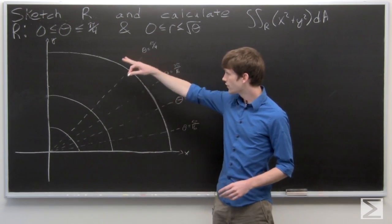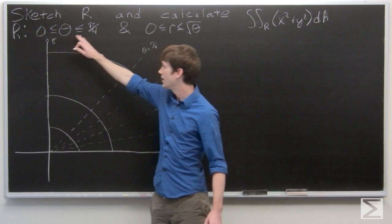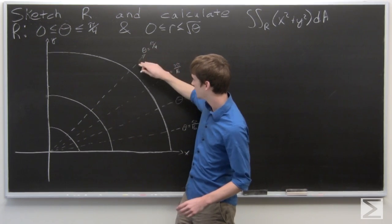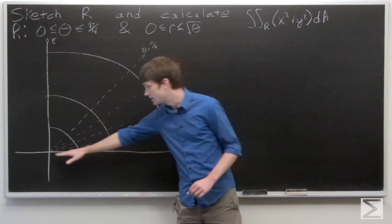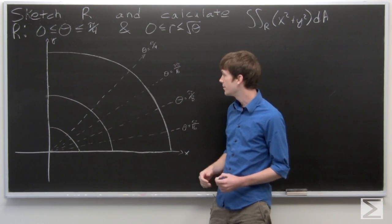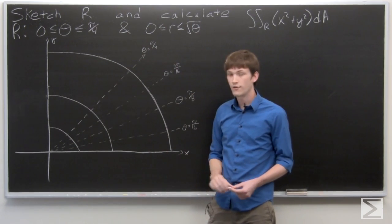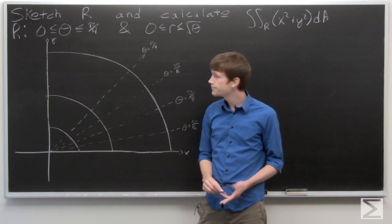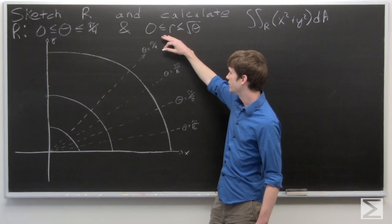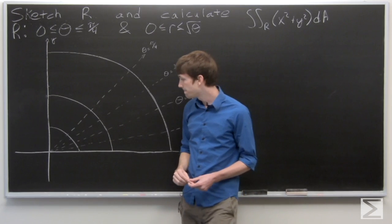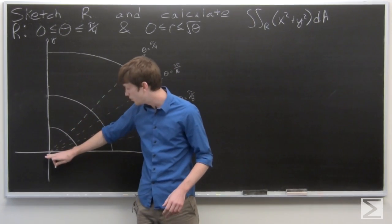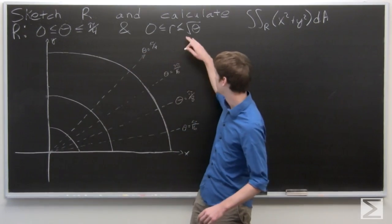First we know that our region R is defined between 0 and pi over 4 for theta, so we're going to be between this top line and our x-axis. Theta is equal to 0 on the positive x-axis, and theta is equal to pi over 4 is the line y equals x. Our radius r is varying from 0 to the square root of theta, so when r is equal to 0 we're at the origin.